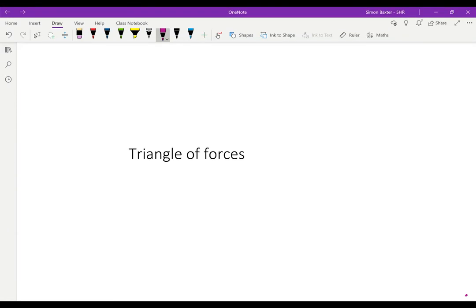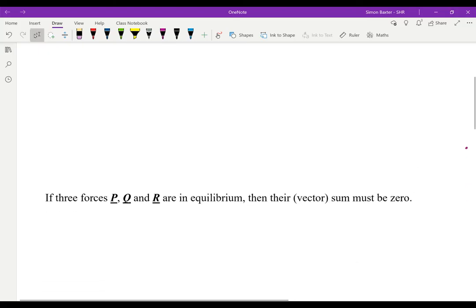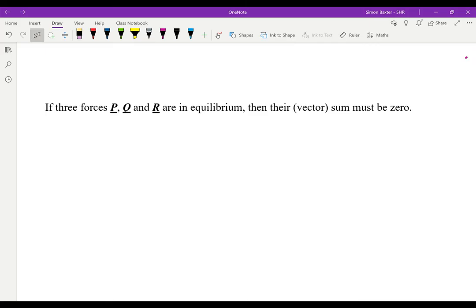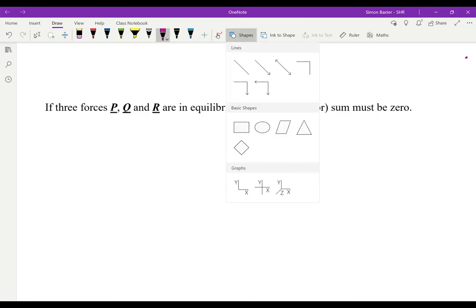Today I'm going to talk about triangle of forces. This quite clearly involves three forces in equilibrium. If I have three forces, three vector forces P, Q, and R, all in equilibrium, then their vector sum must be zero. Let's illustrate that.